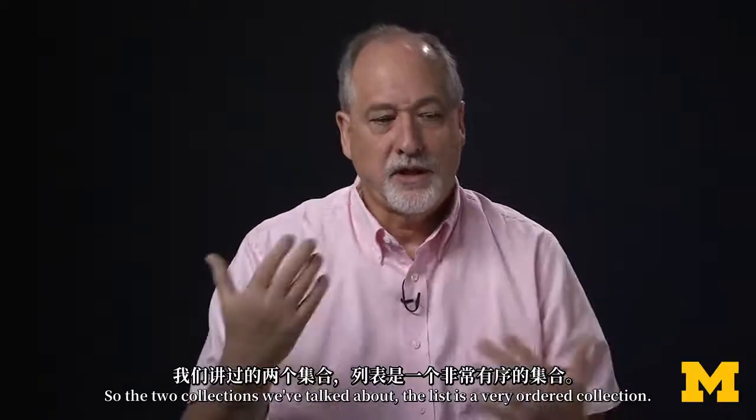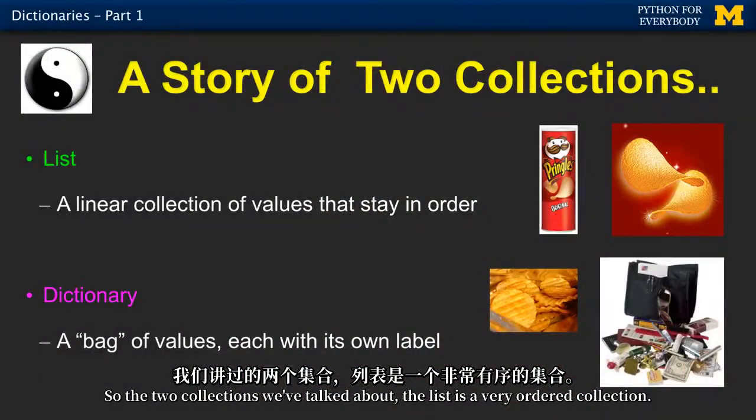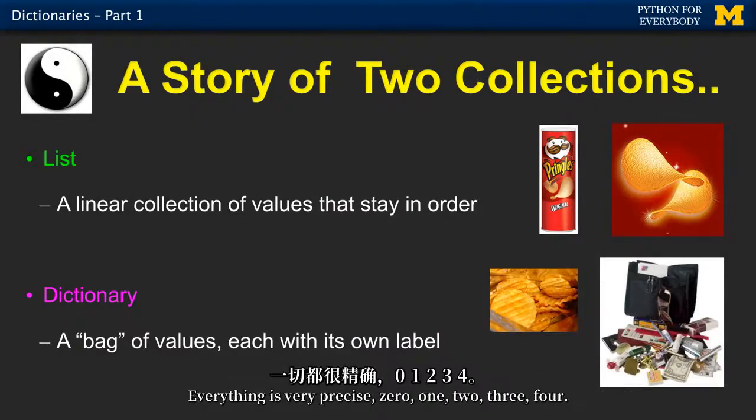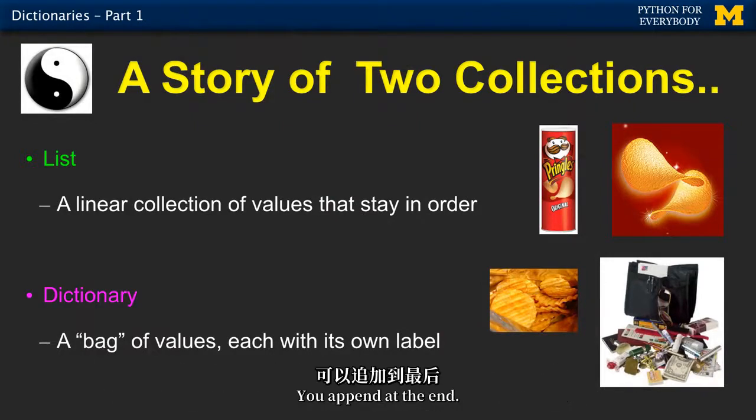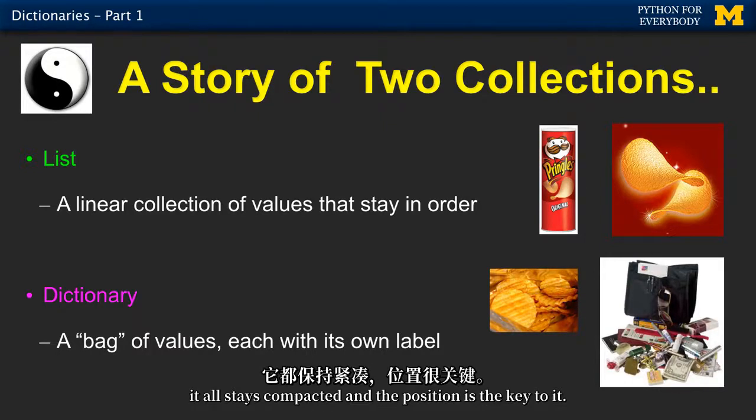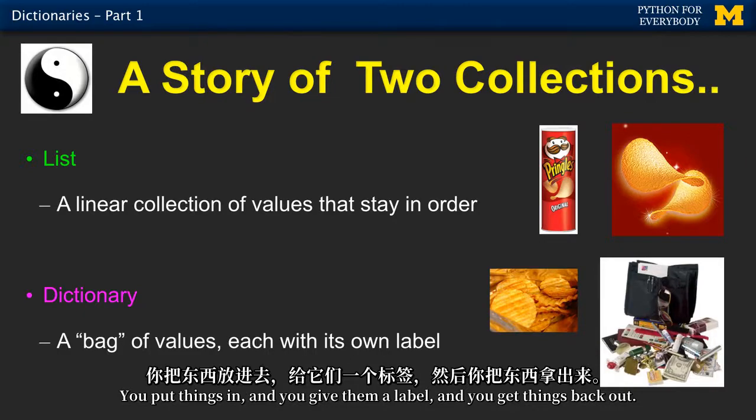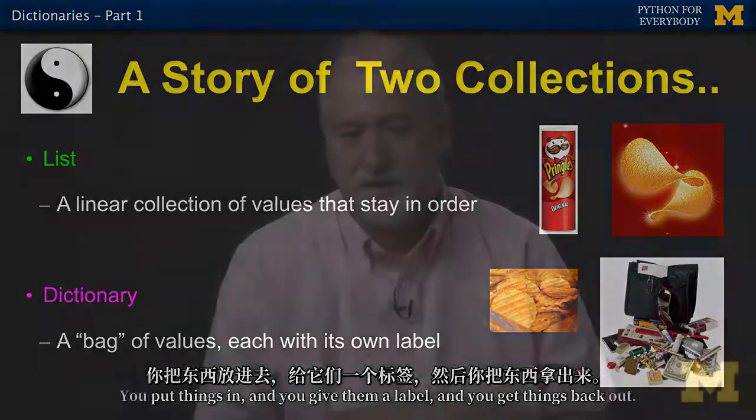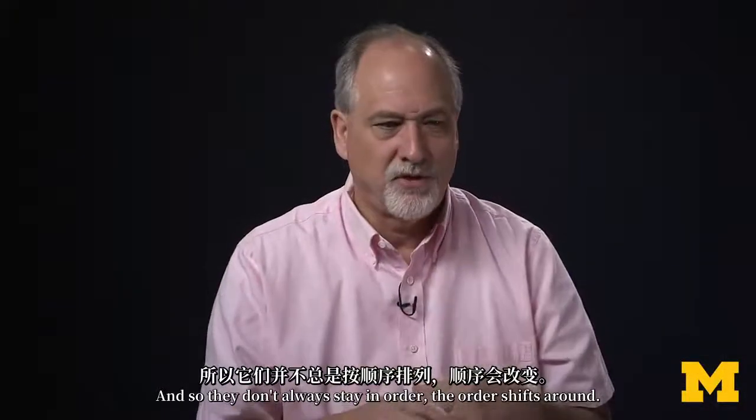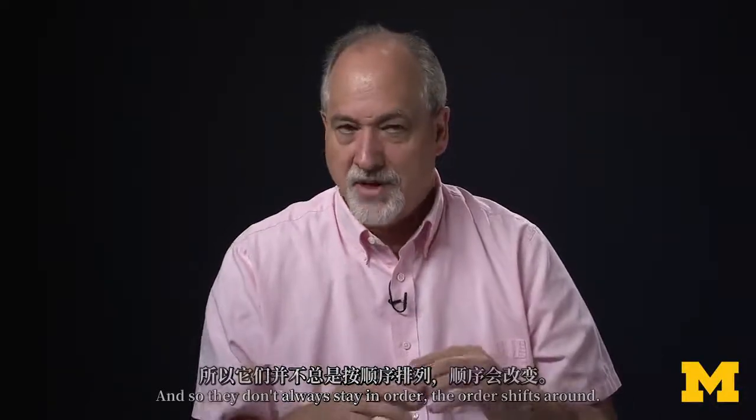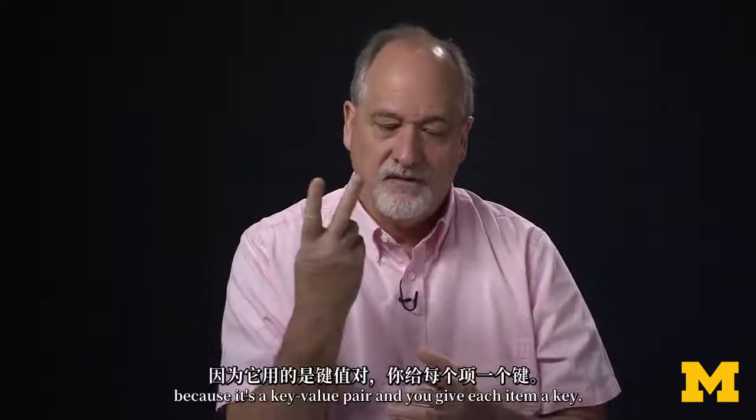So the two collections we've talked about, the list is a very ordered collection. Everything is very precise, zero, one, two, three, four. You append at the end, and when you start deleting, it always stays compacted, and the position is the key to it. But a dictionary is more of a mess. You put things in, and you give them a label, and you get things back out. So they don't always stay in order, the order shifts around. But they're super powerful because it's a key value pair. You give each item a key on the way in, and you get a key on the way back out.